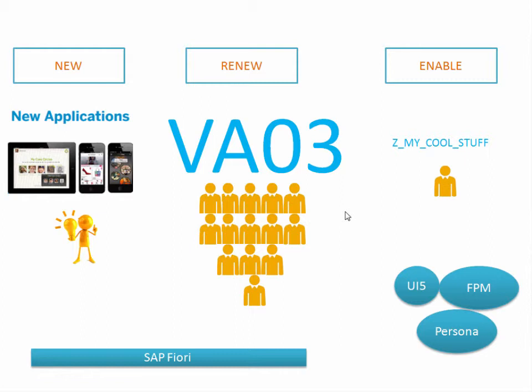When we look at business scenarios, there are many business processes which are specific to individual businesses. For that, SAP has provided some toolkits, and customers have to use these toolkits to customize their own business processes and map them to the technology. In this toolkit, we have technologies like Screen Persona, Floor Plan Manager, and the very famous JavaScript library from SAP, SAPUI5, which we will cover in detail in the next series.